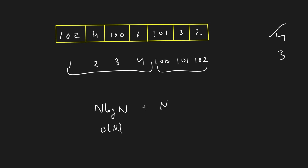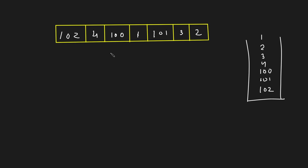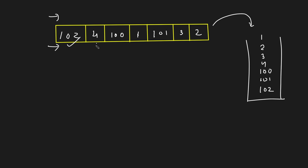The interviewer might not be happy with the naive solution since you're distorting the array and using O(n log n). He might ask you to optimize. The optimized solution is to linearly iterate and insert all elements into a hash set. Once done, we linearly iterate again. The first element we get is 102 — we check if 101 exists in the hash set. It does, so we do nothing. Next we move to 4 and check if 3 exists. Yes it does, so we do nothing again.